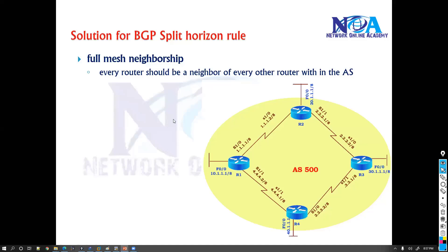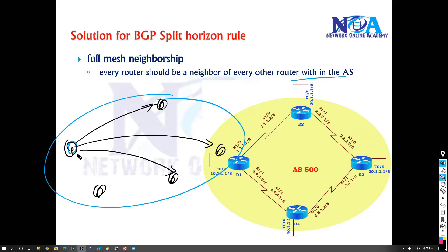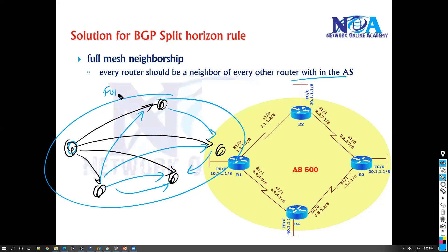The solution is we need to have full mesh neighbor relationships, which means every router should be a neighbor of every other router within the same AS. Let's say this is my AS and I decided to run BGP on four or five routers — this router should be a neighbor of this router, this router, this router, and this router. Full mesh means every router should be a neighbor of every other router within the same AS.